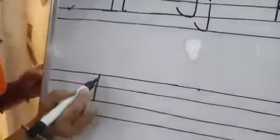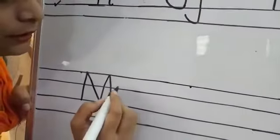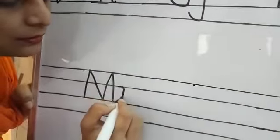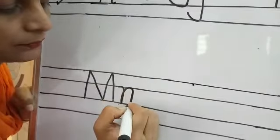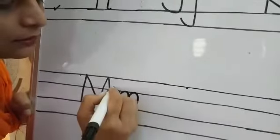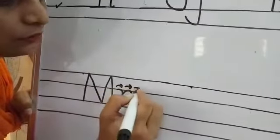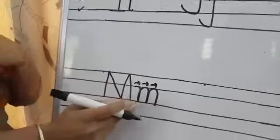For capital M: one standing line, one slanting line, two slanting lines, and again one standing line — M, monkey. For small letter M, draw like this, start from here and move here, taking one, two and three turns. This is M — monkey.